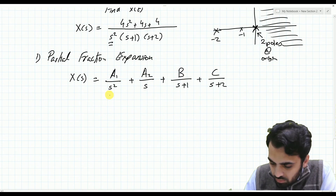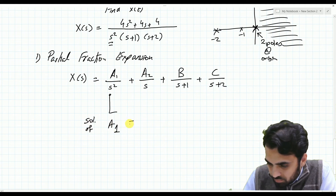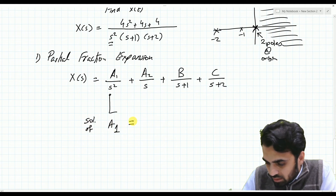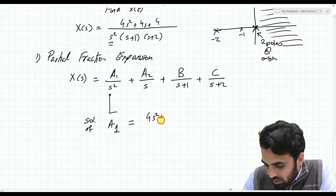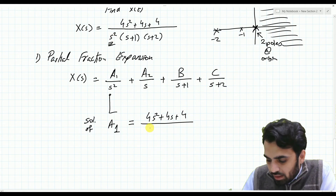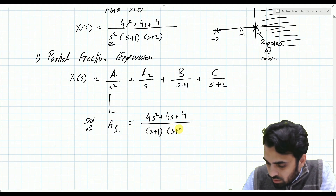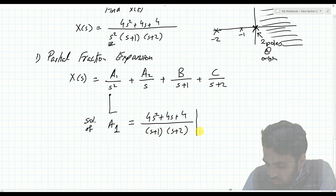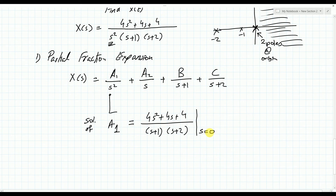Solving for A1: multiply X(s) by s², cancel the s² in the denominator, and set s = 0. This gives (4s² + 4s + 4) / ((s+1)(s+2)) evaluated at s = 0, which is 4 / (1·2) = 2. So A1 = 2.